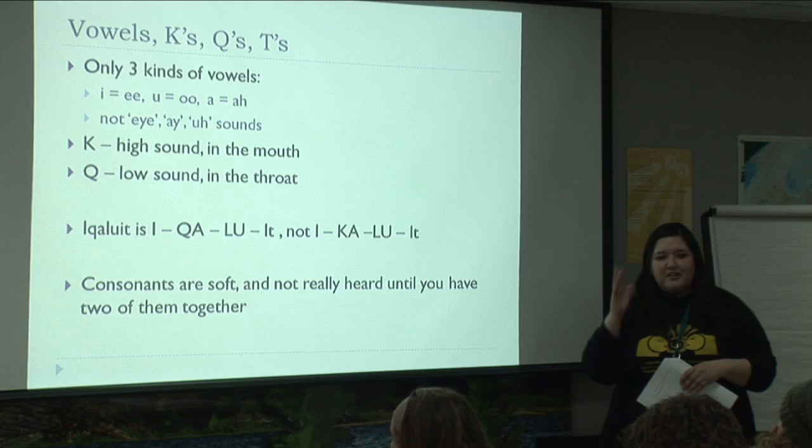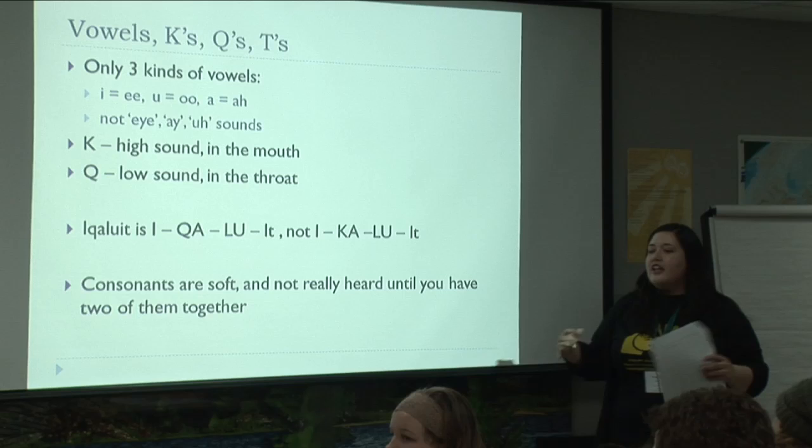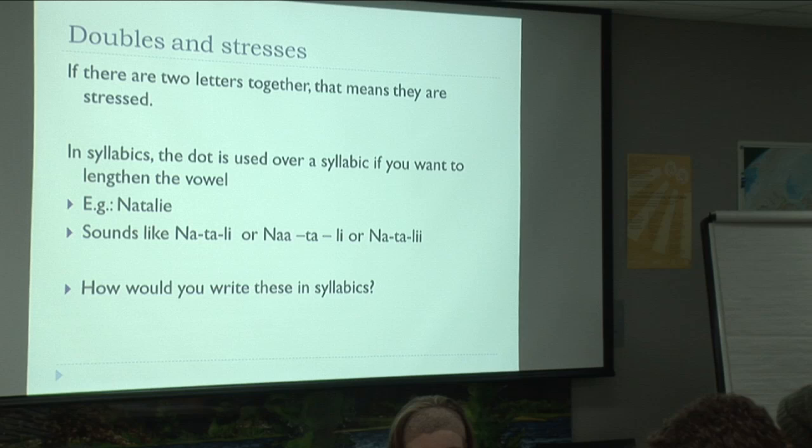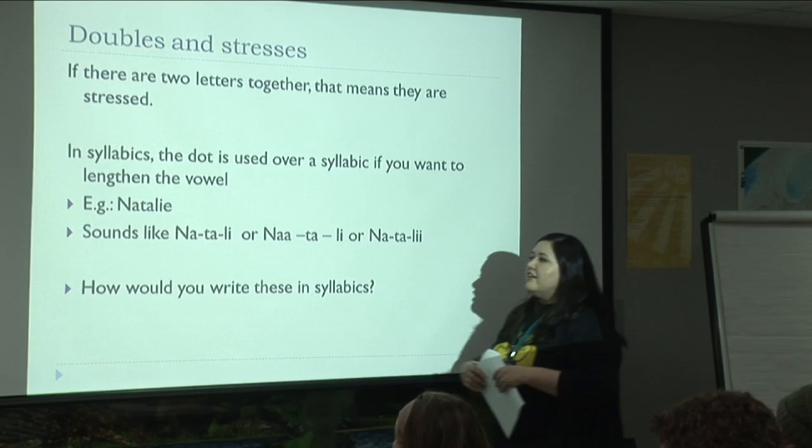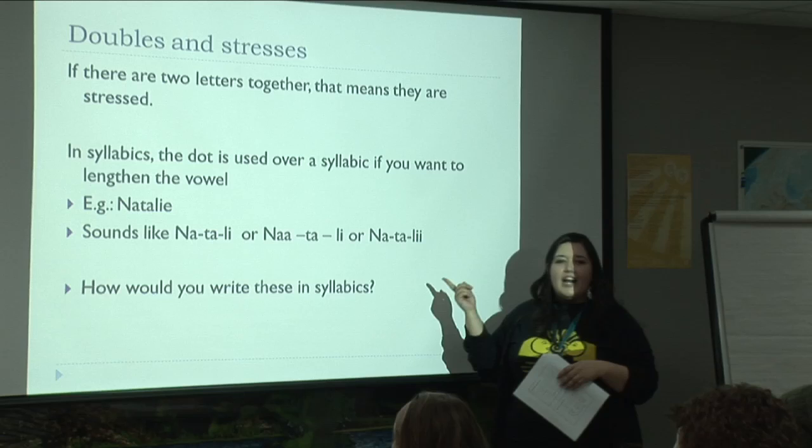Consonants are not really heard a lot — they're very soft, unless you have two consonants together. If there are two together, that means there's stress. In syllabics, for the vowel, there's a little dot. The dot is used over a syllabic to lengthen the vowel. Take the name Natalie — it could be Natalie, or you could say hey, Natalie. It depends on how you say it.